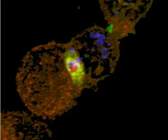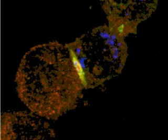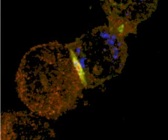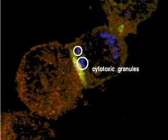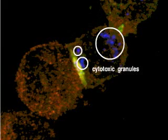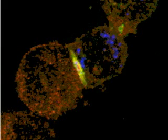In this side view, we can see that some of the cytotoxic granules, stained in blue, have moved close to the interface and are starting to fuse with the synapse. Other granules remain at the opposite end of the cell, perhaps where another synapse is starting to form.